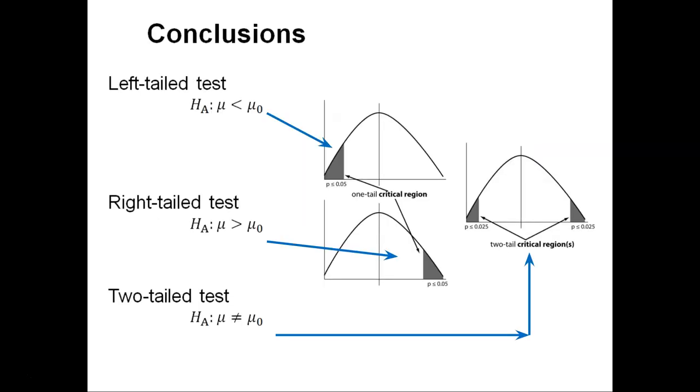When we do a hypothesis test, we can have multiple conclusions. We can first set up our test depending on what side of the distribution we want to test. We can do a left-tail test. This is when our alternative hypothesis suggests that some value mu is less than some value mu sub-zero.